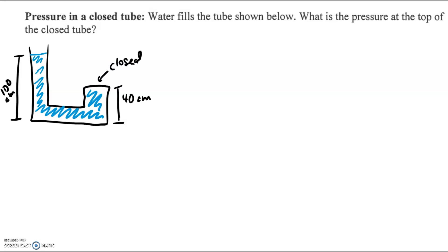So looking at this diagram here, we have a U-shaped tube in which we've got a fluid where the problem tells us the fluid is water. And we want to calculate pressure at the top of the closed tube.